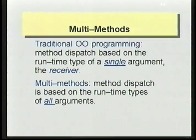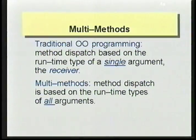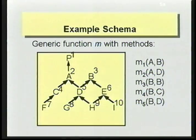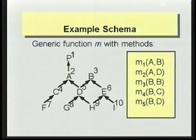If we look at an example schema, we see a type hierarchy with ten types and a generic function — that's what they're called with multi-methods — with five different methods implementing this generic function M. They are named M1 to M5 and correspond to five different combinations of types.